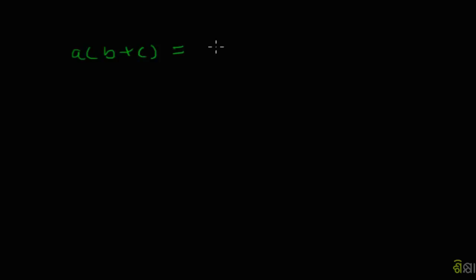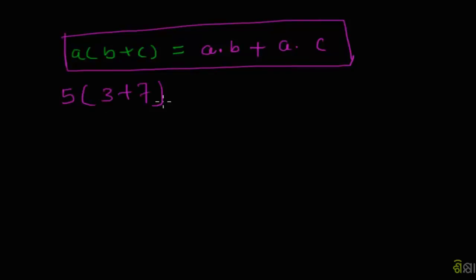The formula is a(b+c) = ab + ac. We will study this through an example: 5 times (7+3). So we calculate 5 into 7 is 35 plus 5 into 3 is 15, which equals 50.